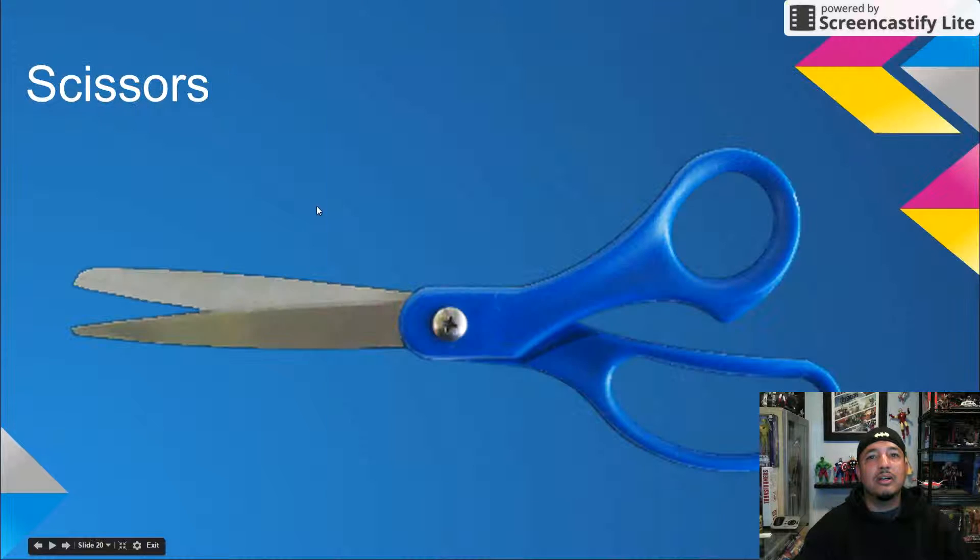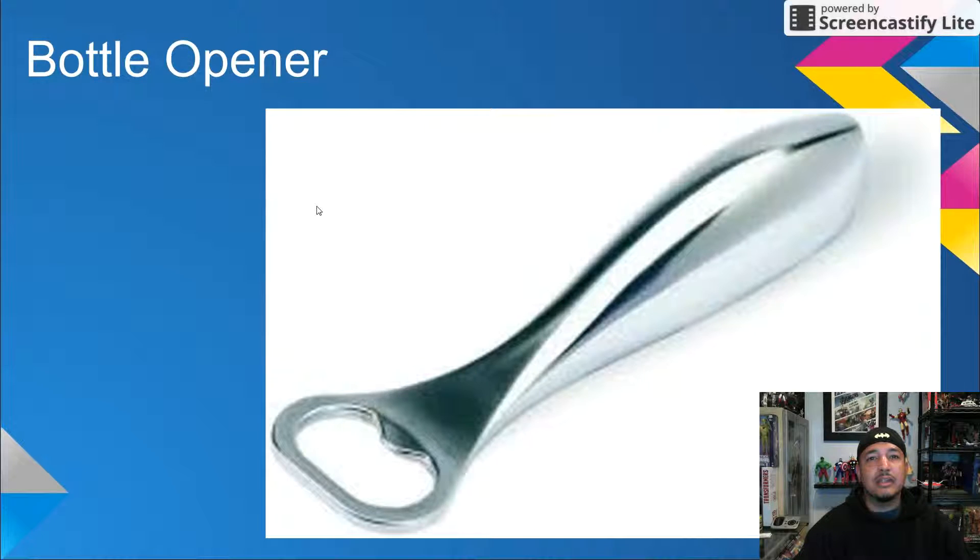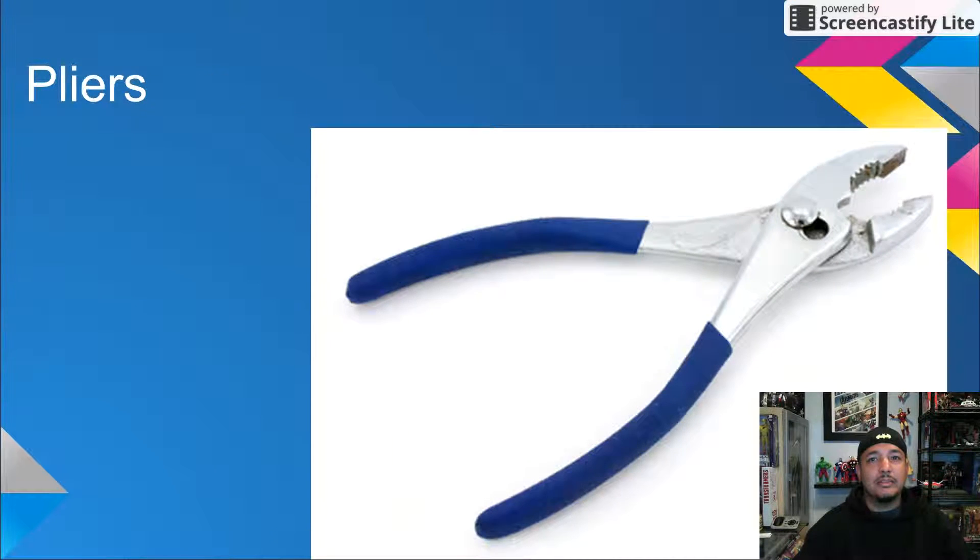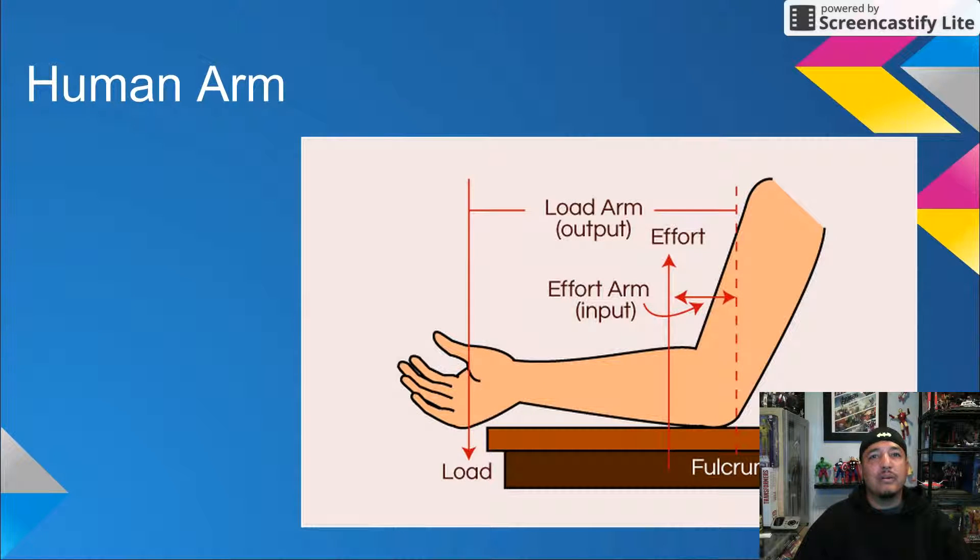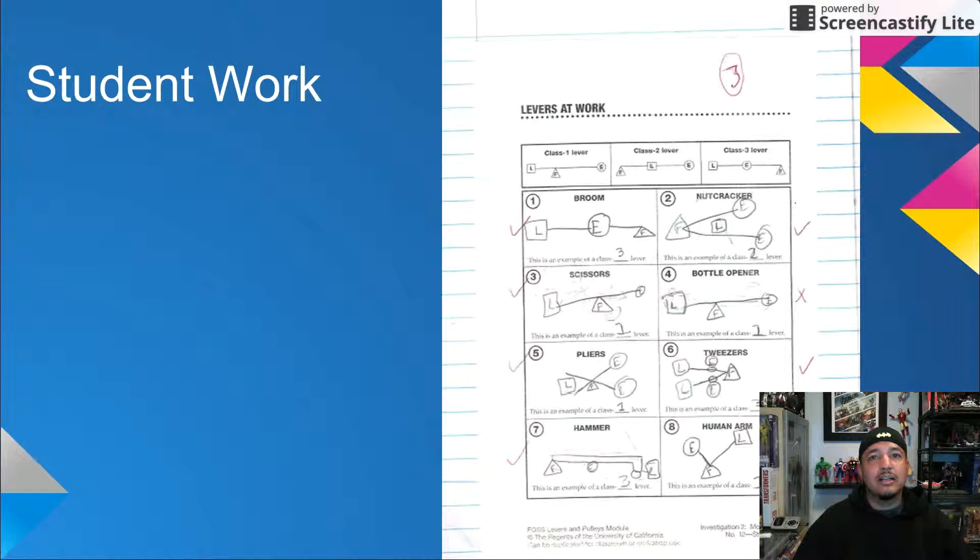Now some students will draw the actual tool, but try to get them to draw diagrams instead. As I mentioned in the overview screencast, if I'm short on time, I would assign part four as a homework assignment. In addition, I have students write a couple of sentences in their notebooks explaining how each tool helps us do work.